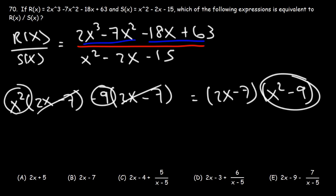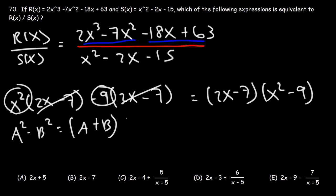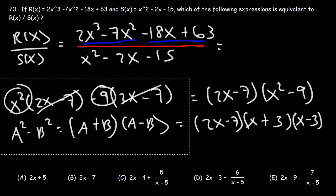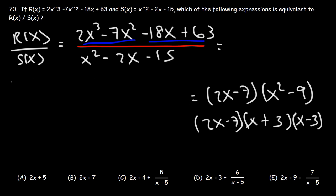Now let's factor out 2x minus 7. If we do, we're going to have x squared minus 9. We can factor x squared minus 9 using the difference of squares formula: a squared minus b squared equals a plus b times a minus b. So a is x and b is the square root of 9, which is 3. Therefore x squared minus 9 factors to x plus 3 times x minus 3. So the numerator is 2x minus 7 times x plus 3 times x minus 3.